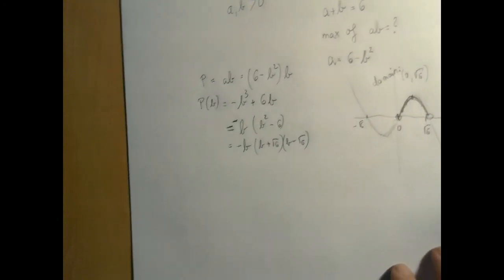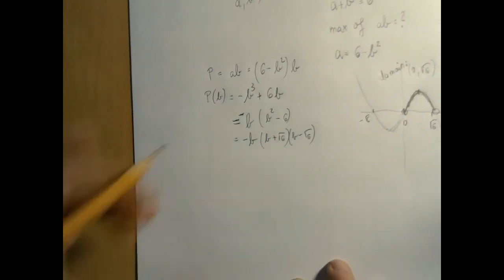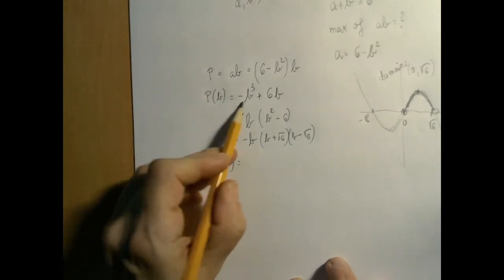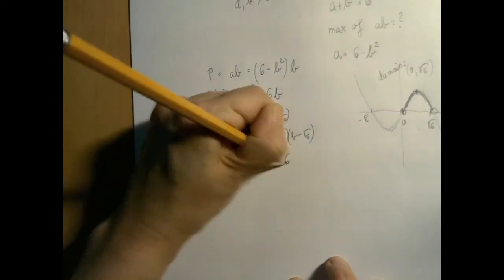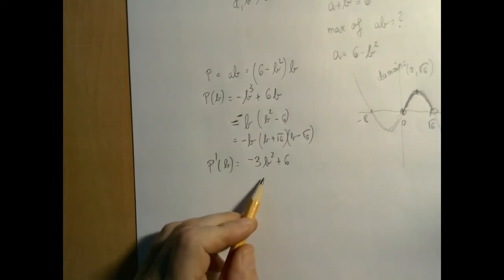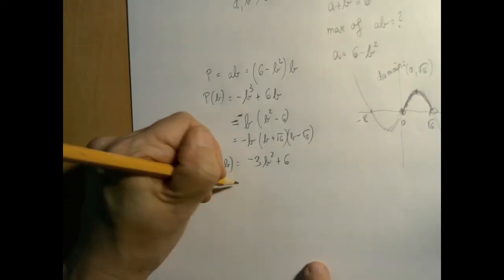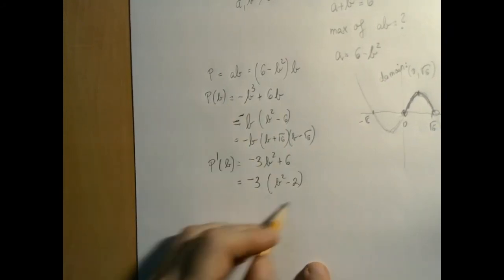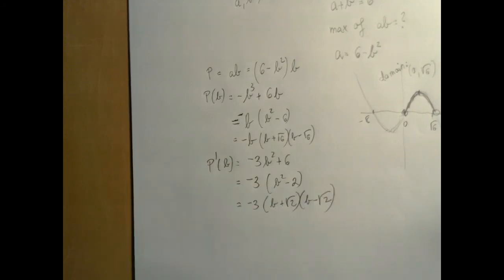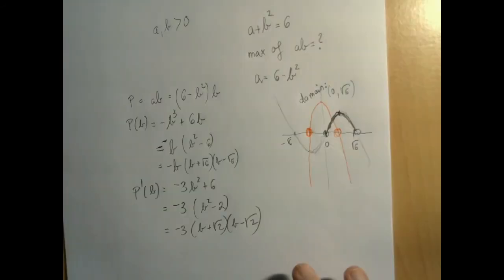So let us differentiate the product function. We get negative 3B squared plus 6. Now this is an upside-down parabola. We know what those look like. I'm going to factor out minus 3, so we get B squared minus 2. The derivative is an upside-down parabola with zeros at square root of 2 and negative square root of 2.